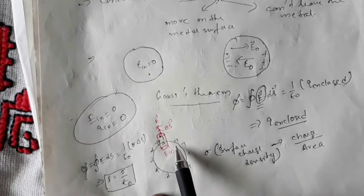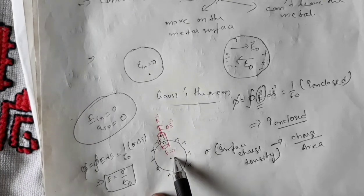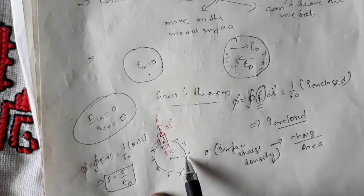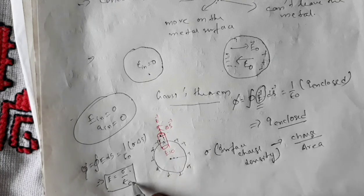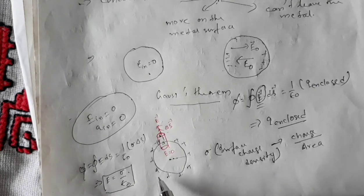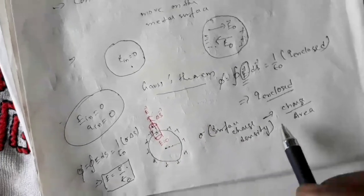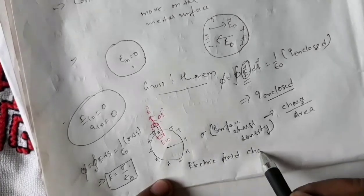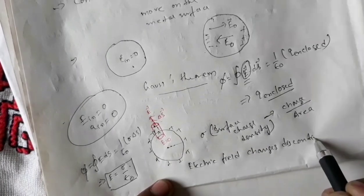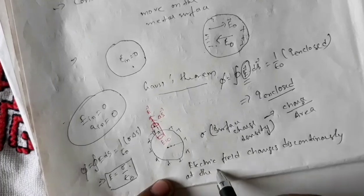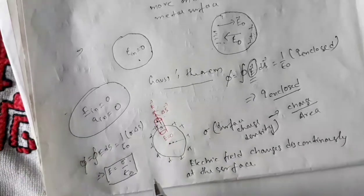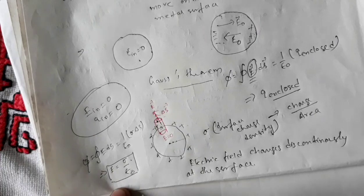The electric field is discontinuous across the surface. Inside the conductor, the electric field is zero right up to just before the surface. As you cross the surface, the electric field intensity becomes sigma by epsilon naught. So we can say the electric field changes discontinuously at the surface: just before the surface it is zero, and as you cross it, it becomes sigma by epsilon naught.